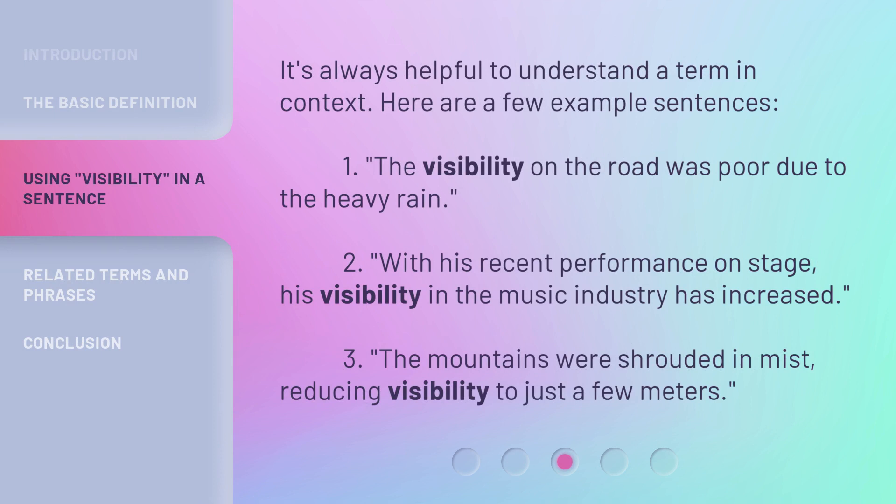It's always helpful to understand a term in context. Here are a few example sentences. 1. The visibility on the road was poor due to the heavy rain. 2. With his recent performance on stage, his visibility in the music industry has increased. 3. The mountains were shrouded in mist, reducing visibility to just a few meters.